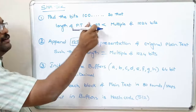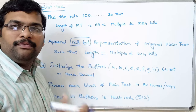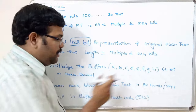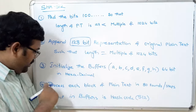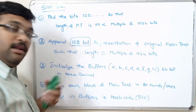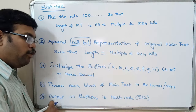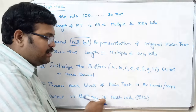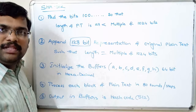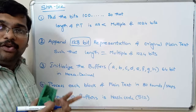In the second step, append the 128-bit representation of the original plain text message so the total length is a multiple of 1024. The plain text is then processed in 1024-bit blocks. In the third step, initialize the eight buffers of 64 bits each to store intermediate results or output. The fourth step processes each block in 80 rounds, and the output of each block is given as input to the next block. The output stored in the buffers after all blocks is the 512-bit hash code.